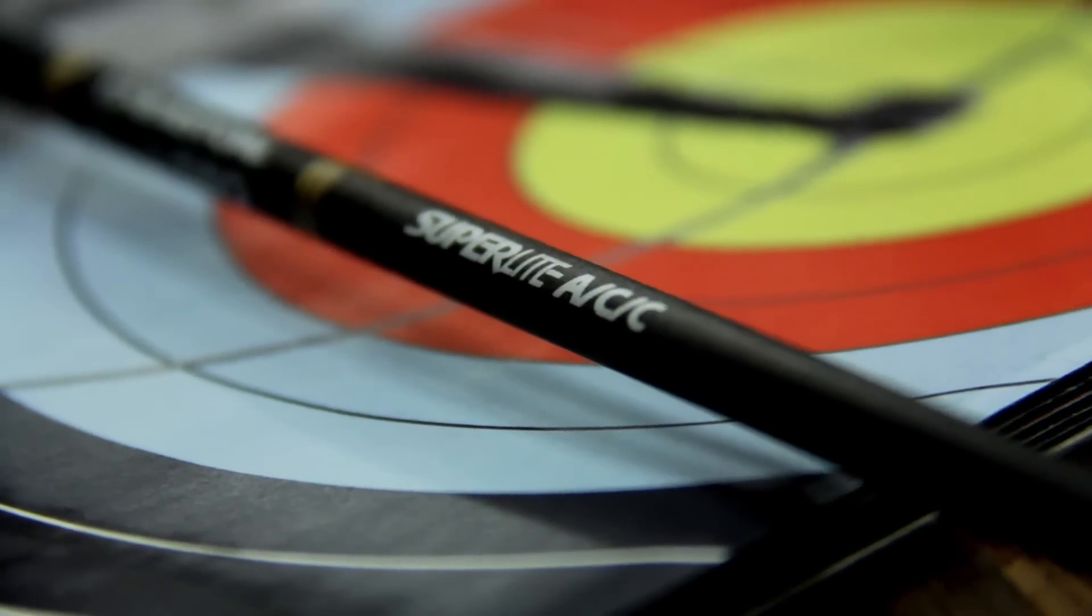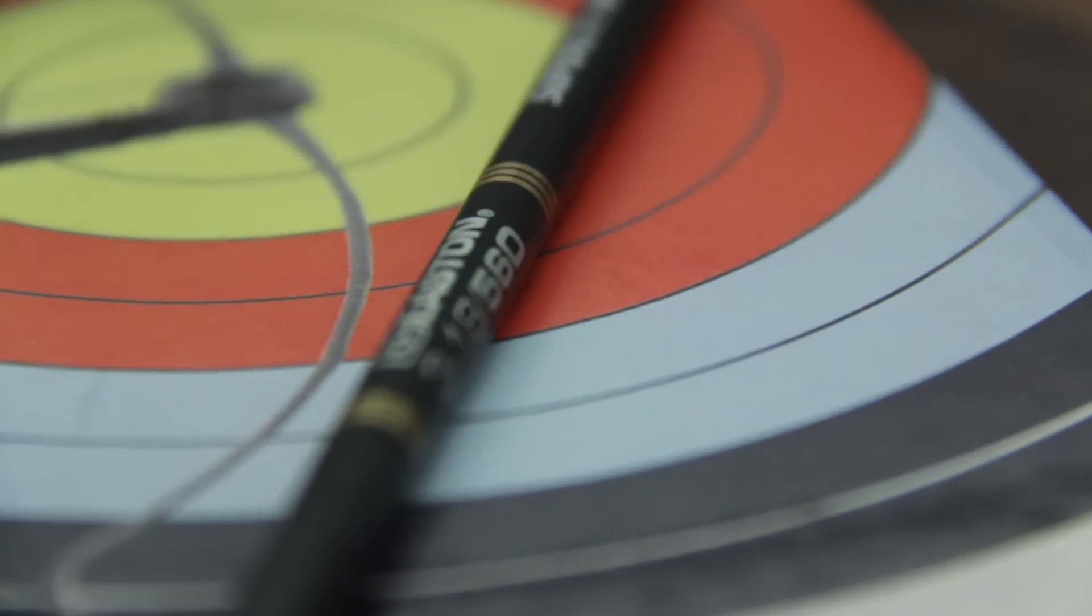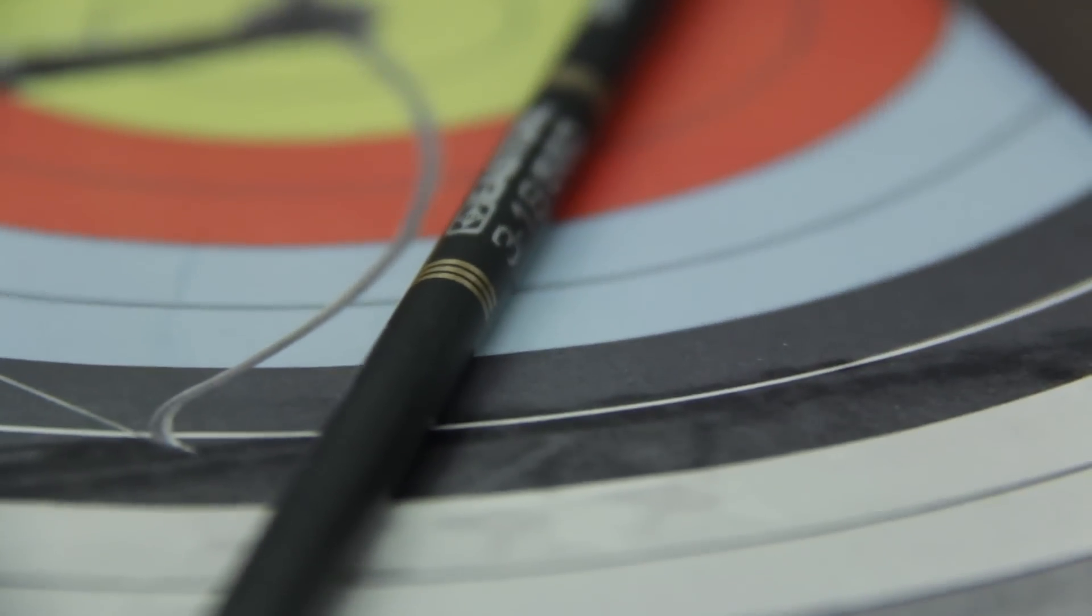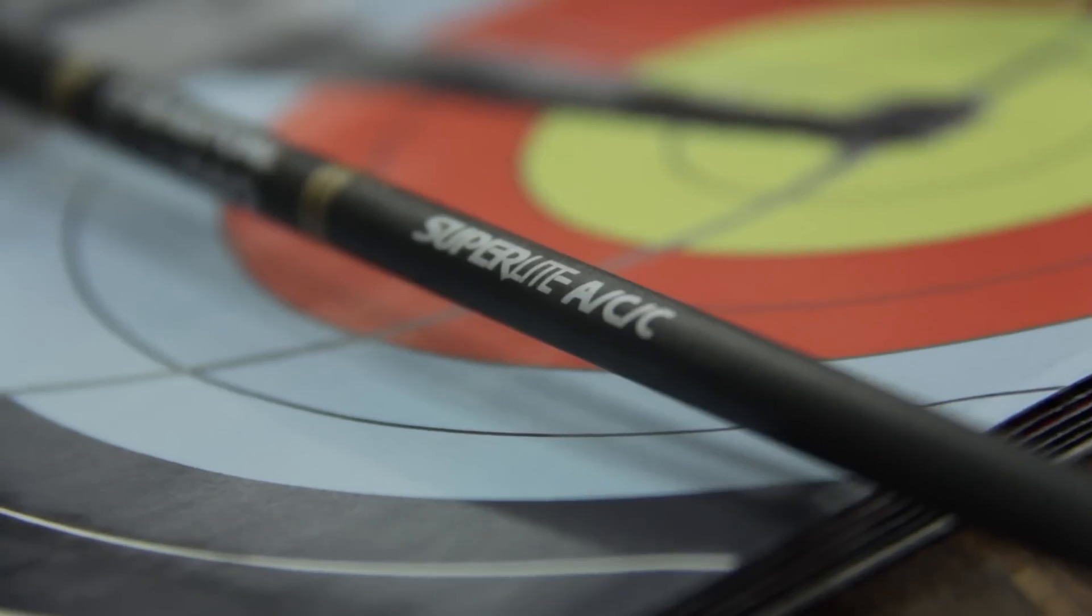The venerable Easton ACC is a parallel aluminum carbon arrow. It has an aluminum core and unidirectional carbon on the outside. This arrow has been a high performer for both compound and recurve for many years.